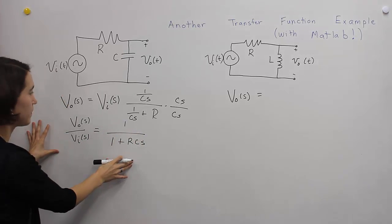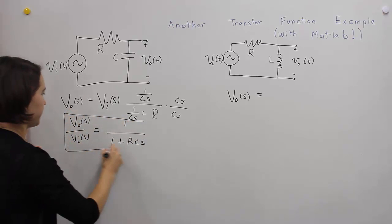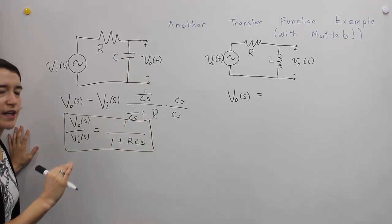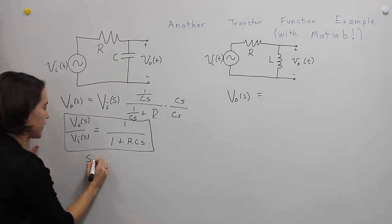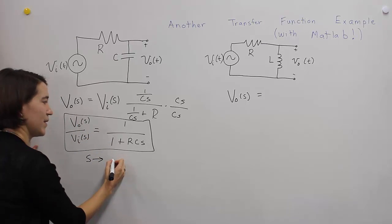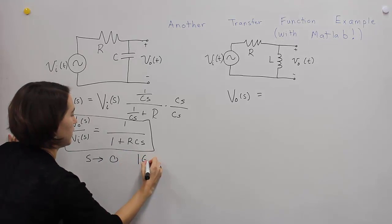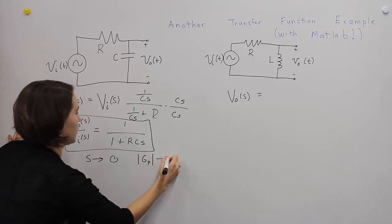So here's our transfer function, and we're going to start here. Now look at it in terms of what happens as frequency, we already did this, so a quick review, goes to 0. We get the gain goes to 1.